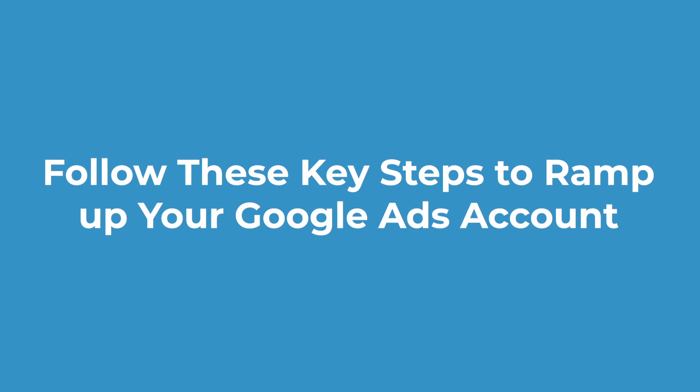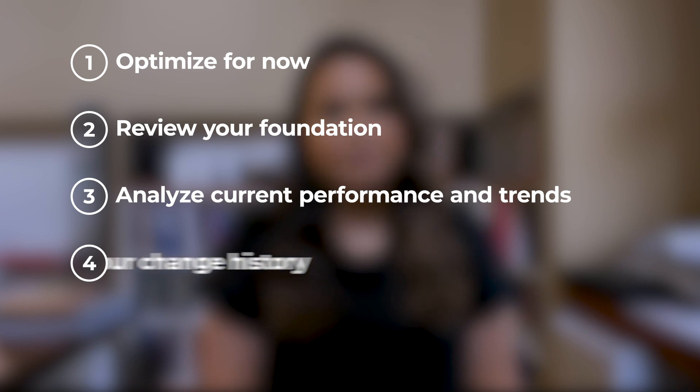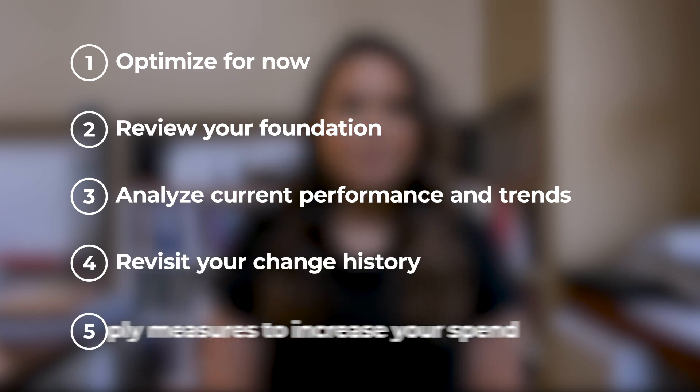Follow these key steps to ramp up your Google Ads account. There's a lot to consider when preparing to ramp up, and there's a lot to be done before jumping right into increasing your budgets. Here are the steps we just covered: one, optimize for now; two, review your foundation; three, analyze current performance and trends; four, revisit your change history; and five, apply measures to increase your spend. You can find links to download the charts in the description below, along with more resources on account structure, conversion tracking, learning periods, and more. Be sure to check those out and don't forget to subscribe. Until next time.